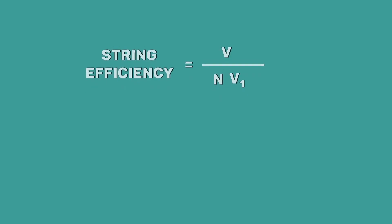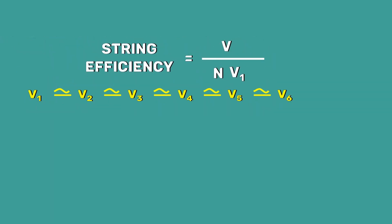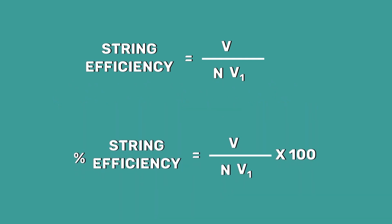The greater the string efficiency, the more uniform the voltage distribution is. 100% string efficiency is an ideal case. This means the voltage across each disc will be exactly the same. Although it is impossible to achieve this, efforts should be made to improve this value as close as possible.